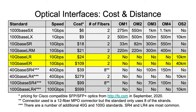Looking at the lower two 10G standards — 10GBASE-LR and 10GBASE-ER — those are single mode only. They're only supported with OS2 fiber, and they'll go 10 kilometers. If you use the ER, it'll go 40 kilometers. There are a couple of standards listed here that I haven't talked about yet.